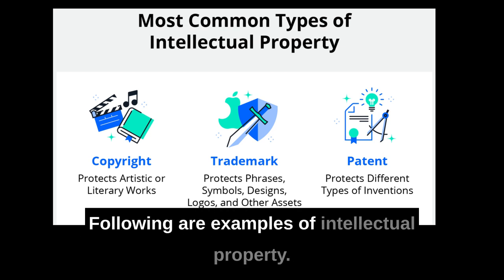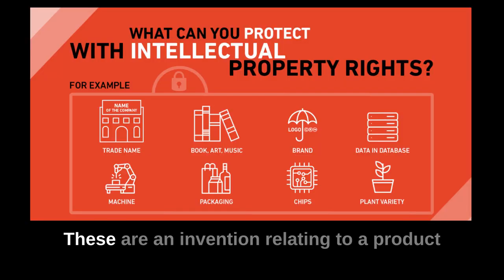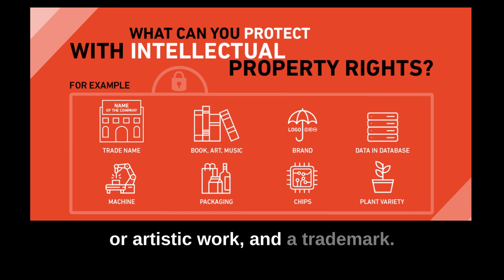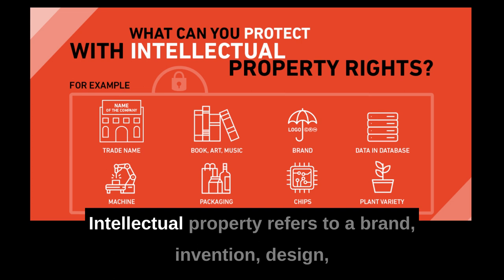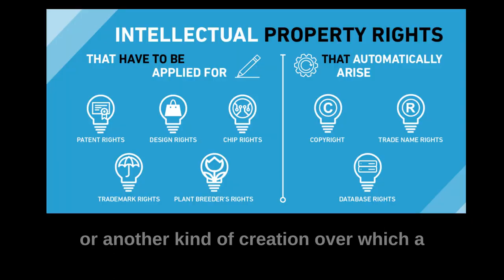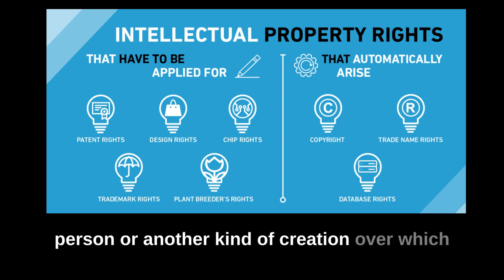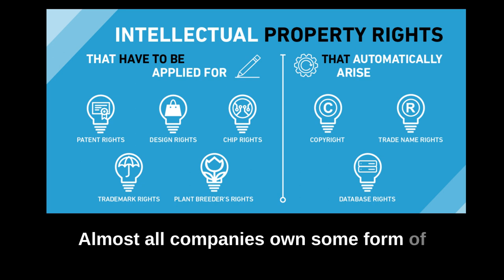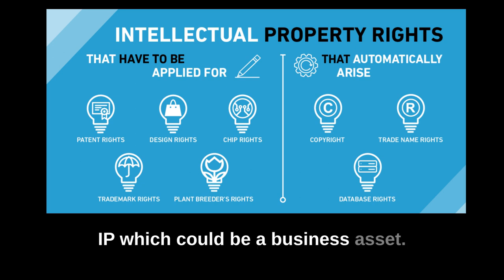Following are examples of intellectual property: an invention relating to a product or any process, a new design, a literary or artistic work, and a trademark. Intellectual property refers to a brand, invention, design or another kind of creation over which a person or business has legal rights. Almost all companies own some form of IP, which could be a business asset.